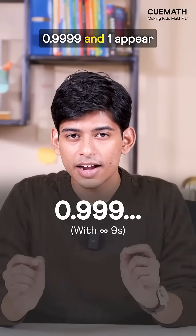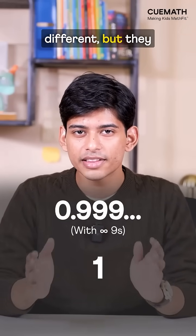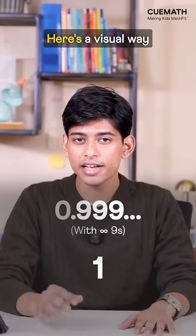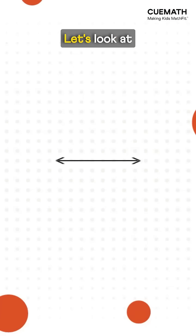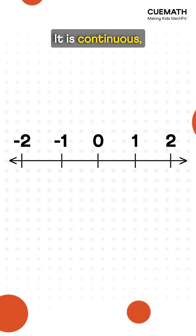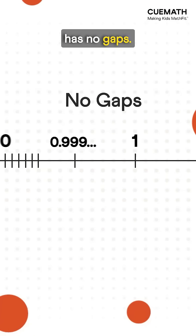0.99999 and 1 appear different but they are exactly equal. Here's a visual way to understand it. Let's look at the number line. It is continuous meaning it has no gaps.